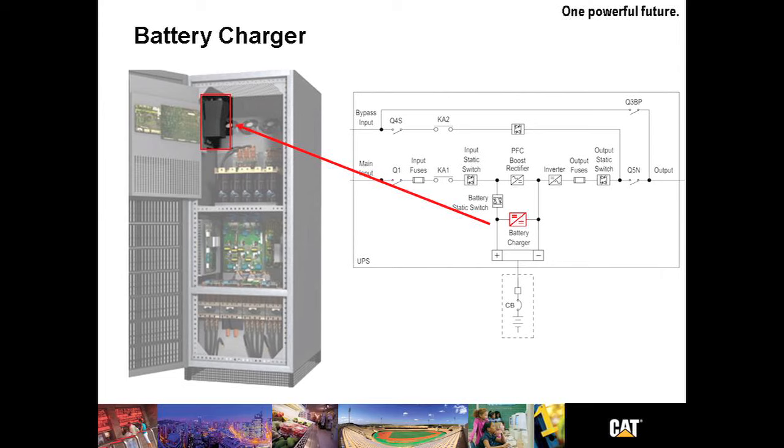DC ripple is limited to less than one percent of the DC voltage. There's a battery meter that indicates the remaining backup time. This can be accessed from the front screen.